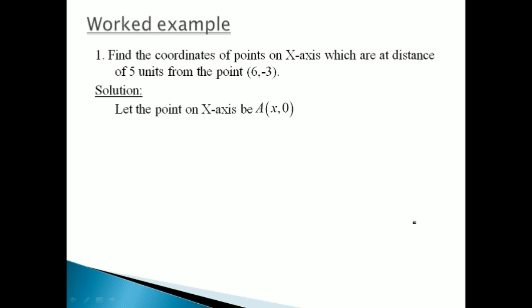Simply by using the distance formula: AB = √[(6 − X)² + (−3 − 0)²] = 5। Minus 3 minus 0 is minus 3, squared gives 9। Expanding (6 − X)² using A minus B whole square formula: 36 − 12X + X²। So under root we have 9 + 36 − 12X + X² = 9 + 45 − 12X + X²। Squaring both sides: 25 = 45 − 12X + X²। Rearranging gives a quadratic equation।